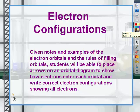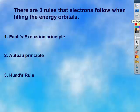Electron configurations are a way of writing where exactly electrons are located. There's three rules that electrons follow when filling energy orbitals: Pauli's exclusion principle, the Aufbau principle, and Hund's rule.